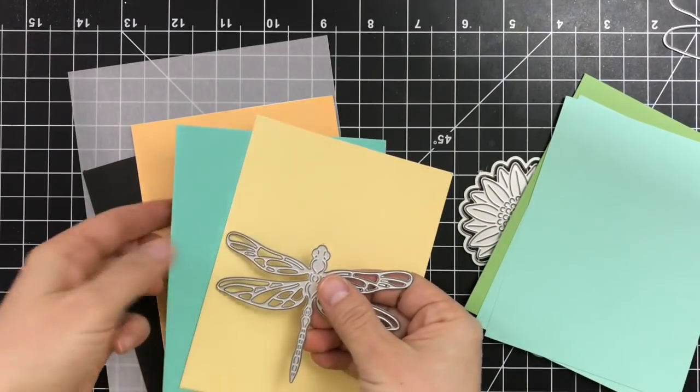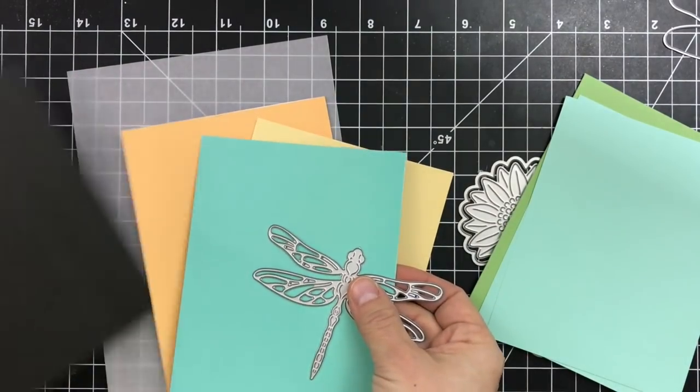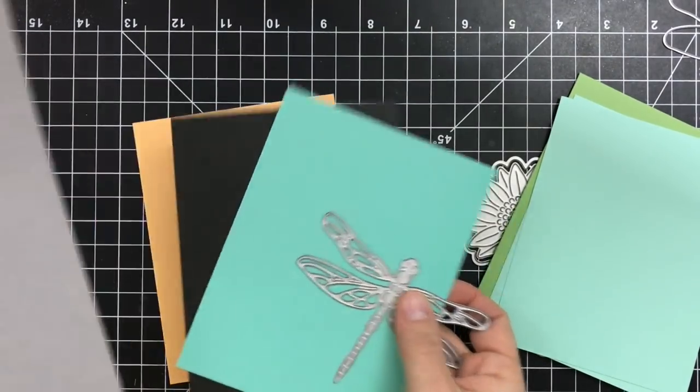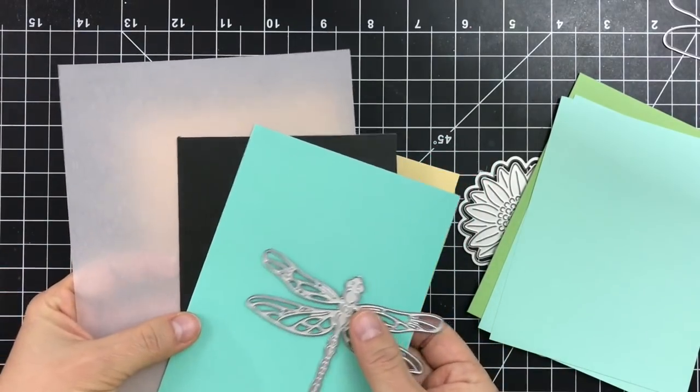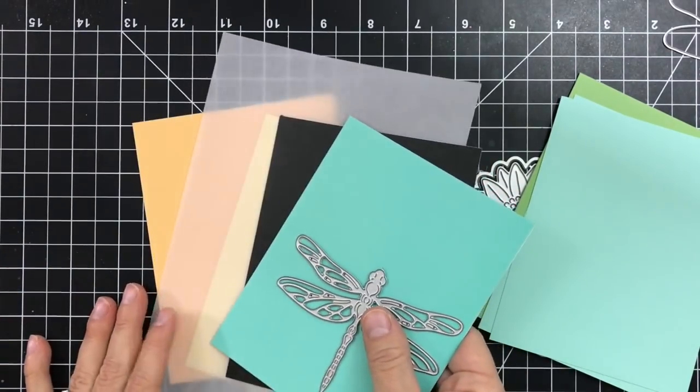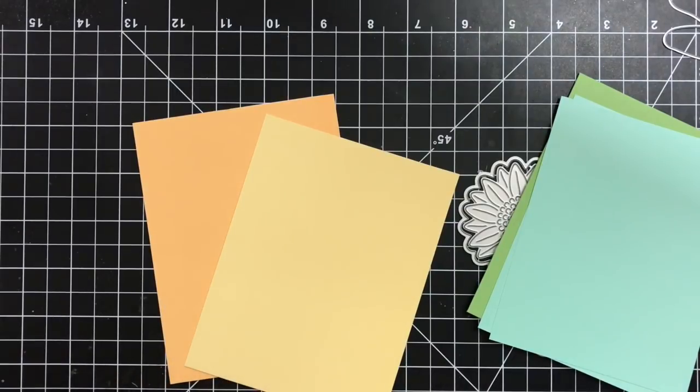So I will die cut two dragonflies out of the pool paper, one from black and one from vellum. The second dragonfly from the pool paper will be used for the front of the card.